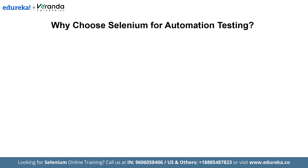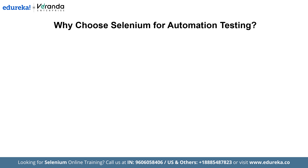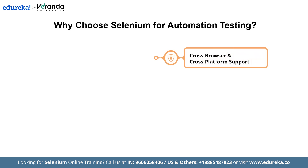Why choose Selenium for automation testing? Selenium is widely used because it is flexible, scalable and open-source. First is cross-browser and cross-platform support — it tests web applications on Chrome, Firefox, Edge and multiple operating systems. Next, it supports multiple programming languages: it works with Python, Java, C#, JavaScript and more, allowing developers to use their preferred language.